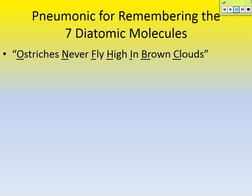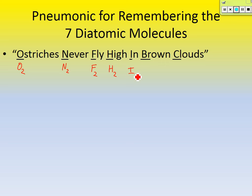The 'O' in ostriches is for oxygen — O2. The 'N' in never is for nitrogen — N2, it's diatomic. The 'F' in fly is fluorine — F2. The 'H' is hydrogen. The 'I' is for iodine. The 'Br' in brown — that's two letters — is bromine, which is diatomic. And 'Cl' in clouds is chlorine. So: ostriches never fly high in brown clouds.